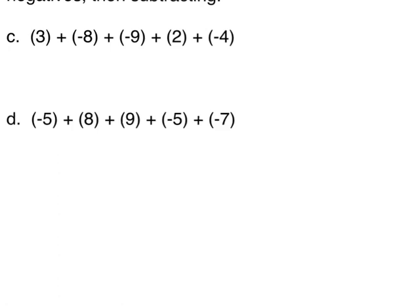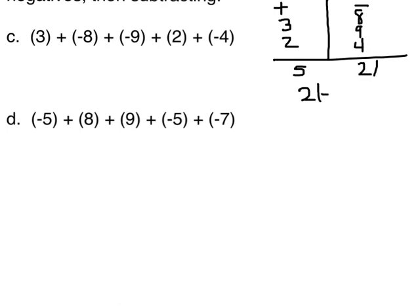In C and D, we're going to add by grouping the negatives together and positives together and then adding. So on the positive side over here, we're going to have 3 and 2. And on the negative side, we have 8, 9, and 4. Let's add those up. We have a 5 here, 8 plus 9 is 17 plus 4 is 21. So we're going to say 21 minus 5 equals 16. And 21 was a negative number, so 16 is also going to be negative. So negative 16 is our answer.